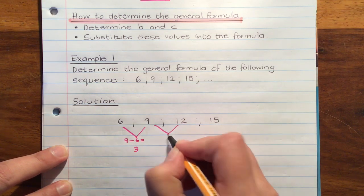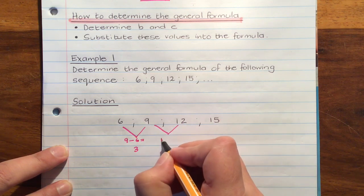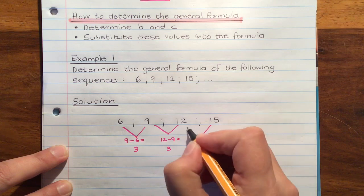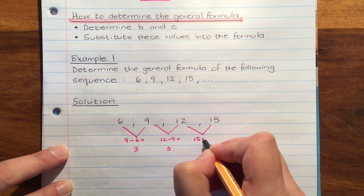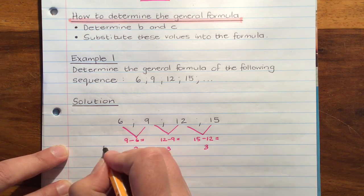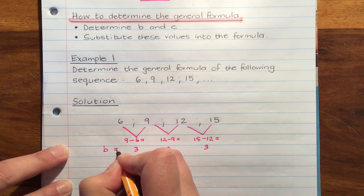And the same thing over here. 12 minus 9 is equal to 3. 15 minus 12 is equal to 3. So B, our common difference, is 3.